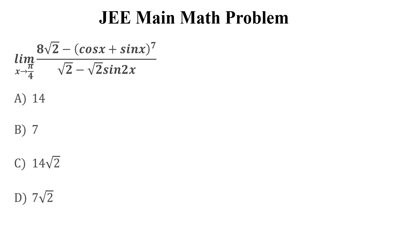The question is: limit x approaches to pi by 4, of 8 times the square root of 2 minus (cos x plus sin x) whole to the power 7, divided by square root of 2 minus square root of 2 times sin 2x. What is the correct option?